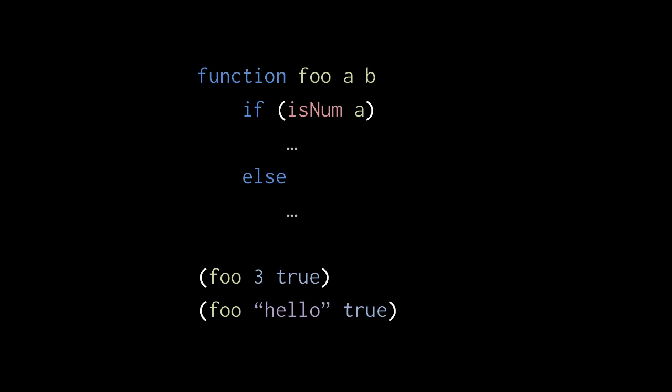So, when we invoke this function foo with a number for the first argument, the first branch will execute. But if we invoke the function foo with something else for the first argument, it will take the other branch.